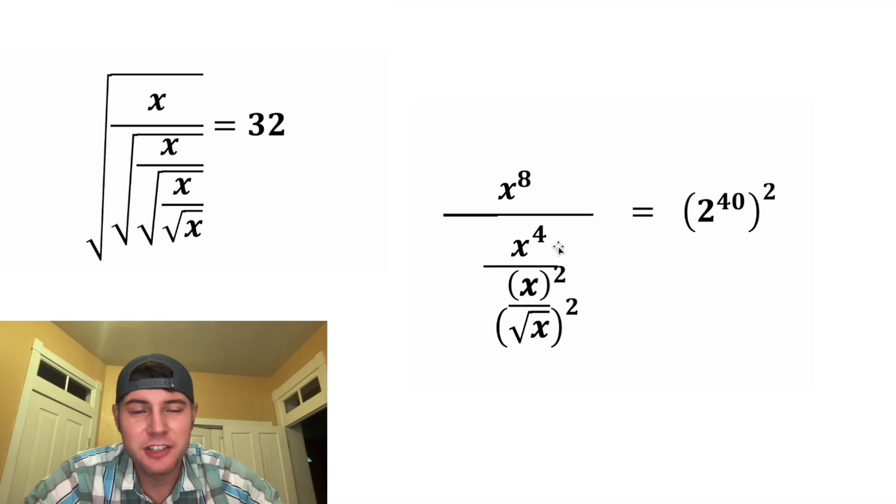The x squared squared is going to become x to the 4th. This will be x squared. And on the very bottom, the square root and the square will cancel each other out. And on the right-hand side, this 40 will multiply by the 2 to give us 2 to the 80th power.